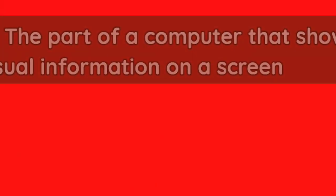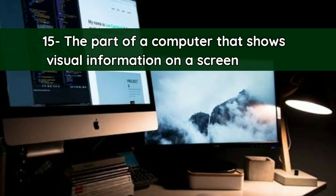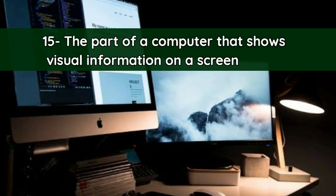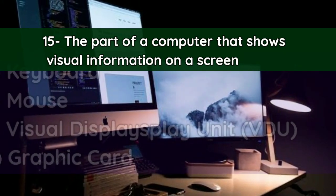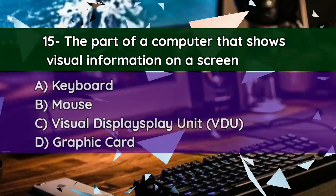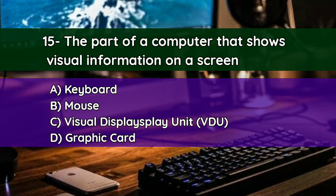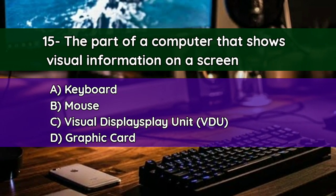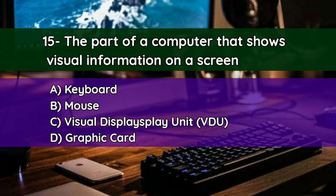Question number fifteen: The part of a computer that shows visual information on a screen — A. Keyboard, B. Mouse, C. Visual Display Unit (VDU), D. Graphic Card. And the correct answer is C — Visual Display Unit, VDU.